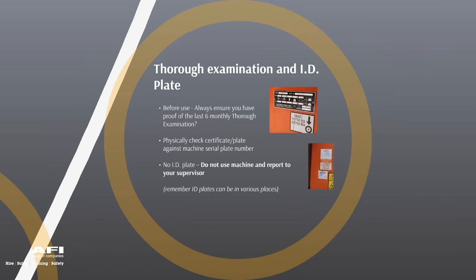We must comply with the law to ensure the MEWP is safe, suitable, and fit for purpose. It must have an in-date six-monthly thorough examination before being used for work. Manufacturers issue a certificate of conformity valid for 12 months. As a rental company, we will carry out a thorough examination before delivery — indicated by a plate on the machine and accompanied by a certificate. Customers on our web portal will automatically receive the thorough examination documentation when hiring.